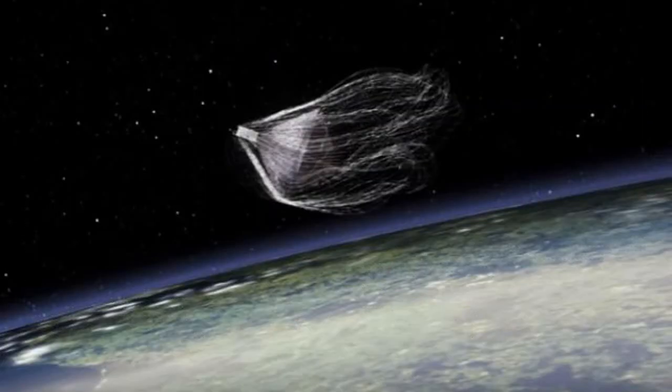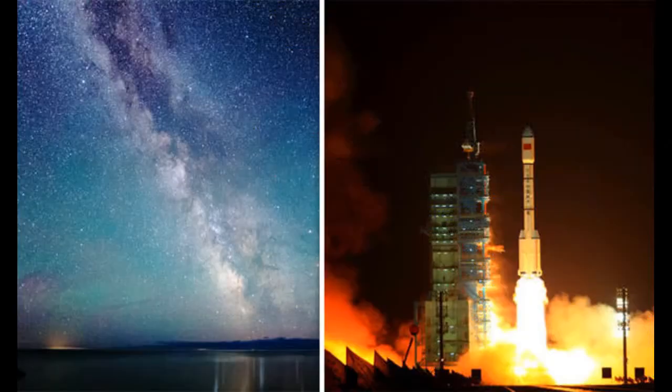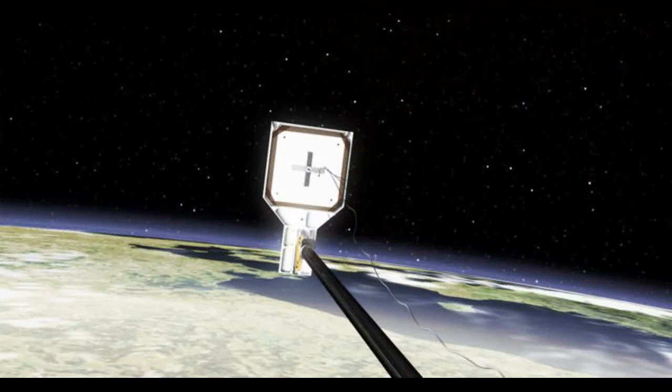Dubbed the space harpoon, the job of the satellite is to locate and acquire dangerous pieces of space junk surrounding the planet. Using a giant harpoon and nets, the satellite is expected to pull pieces of junk down into the atmosphere where they would burn up on re-entry.